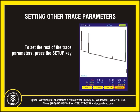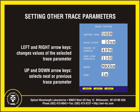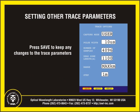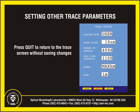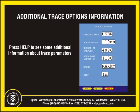To set the other trace parameters, press the yellow function button below the setup soft key. Use the left and right arrow keys to scroll through the values of the selected trace option, and use the up and down keys to scroll through the different trace options. Once the options are set, press the yellow function button below the save soft key. To exit without saving, press quit. For additional information about trace options, press help.